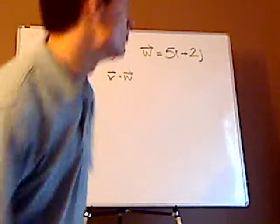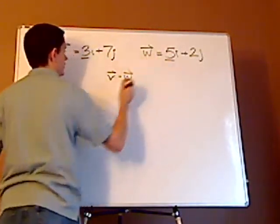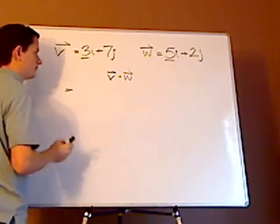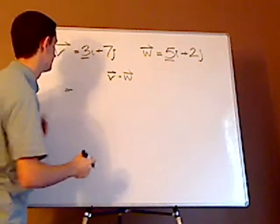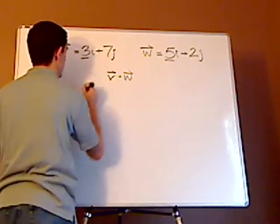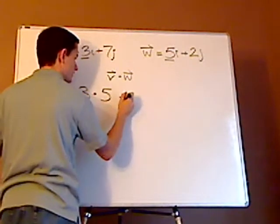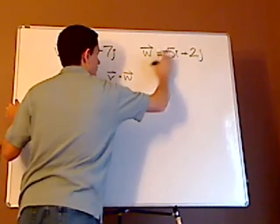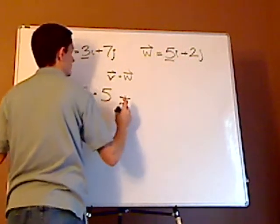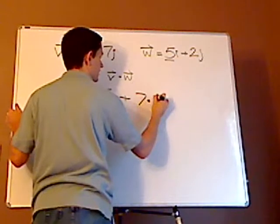The dot product is very simple to find. You take each horizontal component and multiply them. So that's 3 times 5. Plus, it's always plus. And then, the scalars of the vertical components. So that would be 7 times 2.